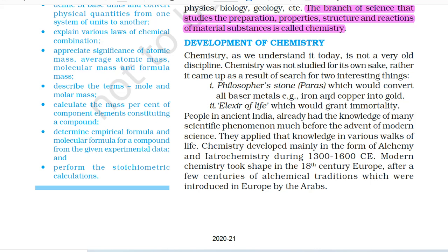First, philosopher's stone, i.e. Paras, which would convert all base metals — for example iron and copper — into gold. And second, elixir of life which would grant immortality. Chemistry developed mainly in the form of alchemy and iatrochemistry during 1300–1600 CE. Modern chemistry took shape in the 18th century Europe after a few centuries of alchemical traditions which were introduced in Europe by the Arabs.